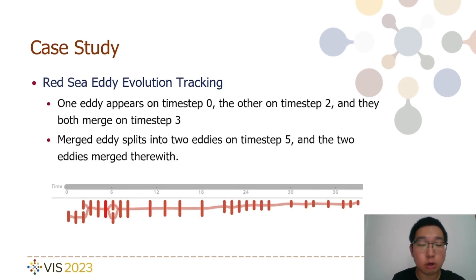In the local view, experts closely tracked the lifecycle evolution of eddies in the Red Sea dataset. To illustrate this, we have chosen one particular eddy as an example. The tracking graphic reveals that one eddy appears at timestamp 0, while another appears at timestamp 2. These two eddies merge together at timestamp 3. Following the merger, this combined eddy subsequently splits into two separate eddies at timestamp 5.